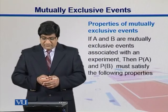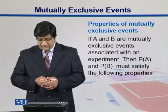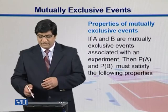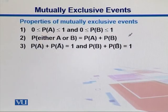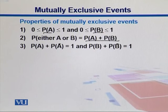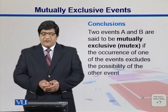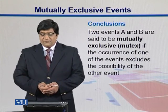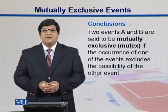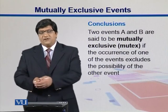A and B are mutually exclusive events associated with an experiment. They must satisfy the following properties: their probabilities range from 0 to 1 for both A and B; the probability of either A or B is simply the sum of their individual probabilities; and the probability of an event plus its complement equals 1 — this is true for both. Two events are said to be mutually exclusive if the occurrence of one excludes the possibility of the occurrence of the other.